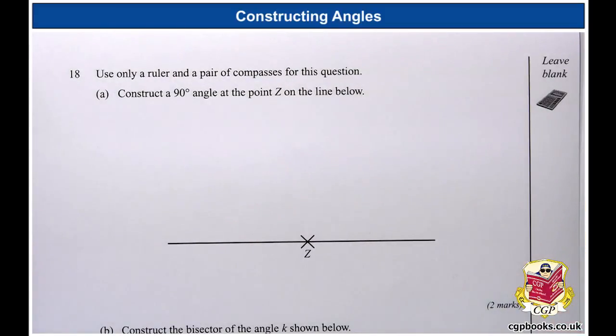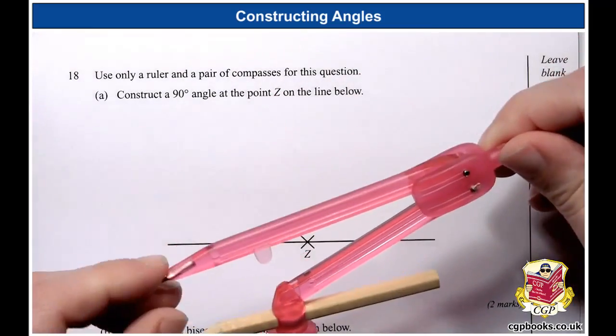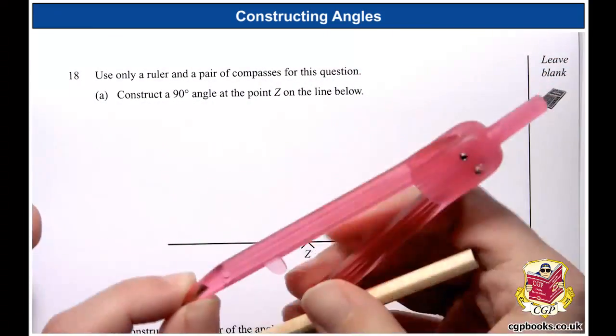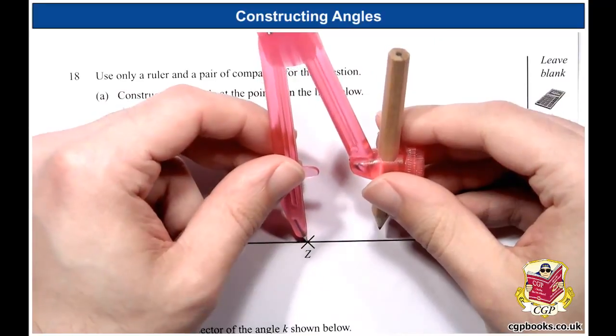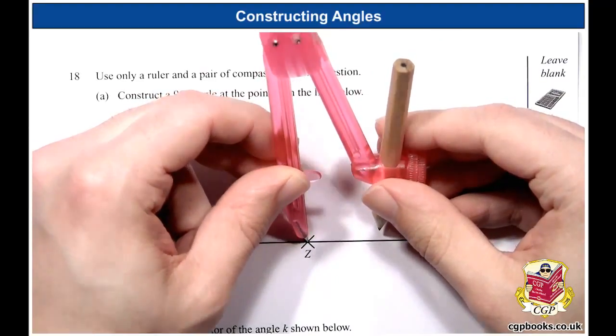So the first thing then is to take our compass and I have been blessed with the lovely pink compass. Here it is. And the first thing we want to do is we want to put the point on our point Z like this.